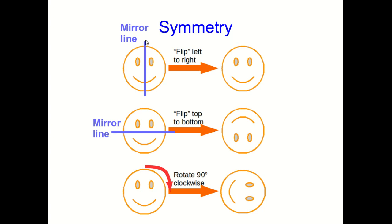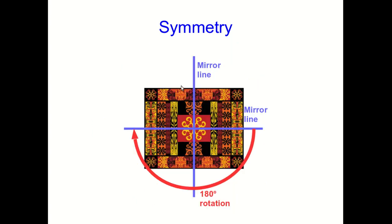A symmetry is some change that you can try out and carry out on something, which leaves the thing appearing unchanged. So similarly, you can verify that this rug appears unchanged if you reflect it through this mirror line, or this mirror line, or if you rotate it 180 degrees. So those are symmetries of this rug.